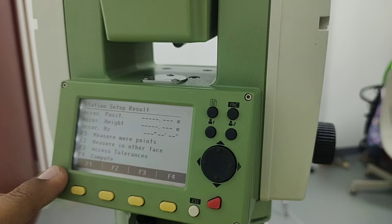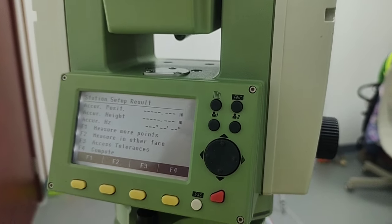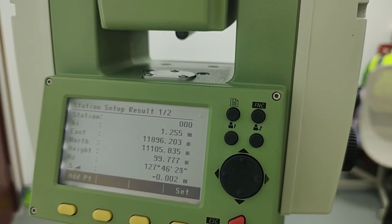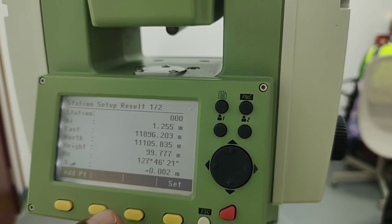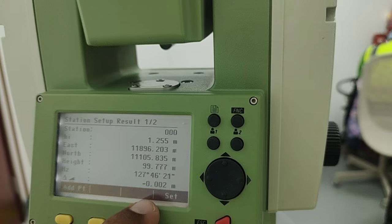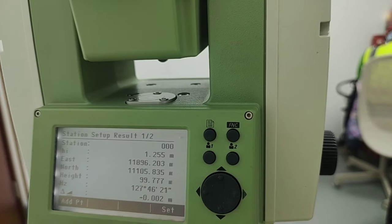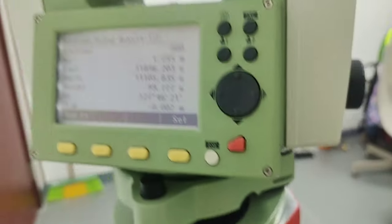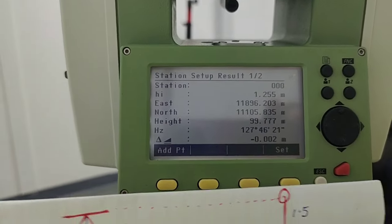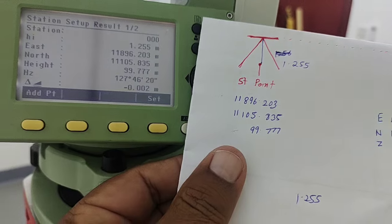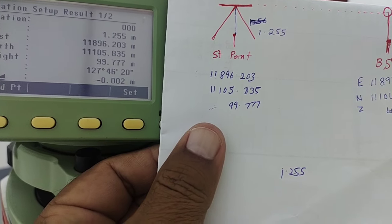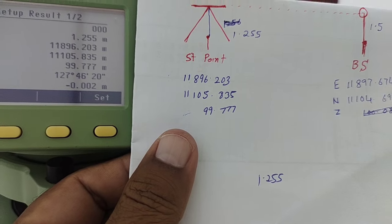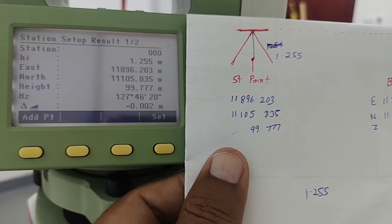In this case I'll press F4 to compute. Once I compute, it shows me the result. In the horizontal distance there is a two millimeter difference. The other values it shows after calculating are the comparison with the station coordinate — as you can see the last figures are 203 and 835, and the elevation is triple seven.